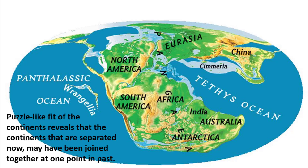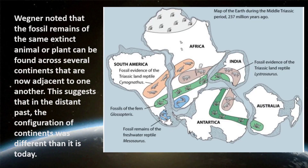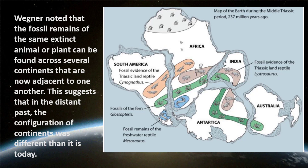Wegener was not the first to notice this puzzle-like fit of the continents, but he was one of the first to realize that the earth's surface has changed through time and that continents that are separated now may have been joined together at one point in the past. Wegener noted that the fossil remains of the same extinct animal or plant can be found across several continents that are now adjacent to one another, suggesting that in the distant past the configuration of continents was different than it is today.